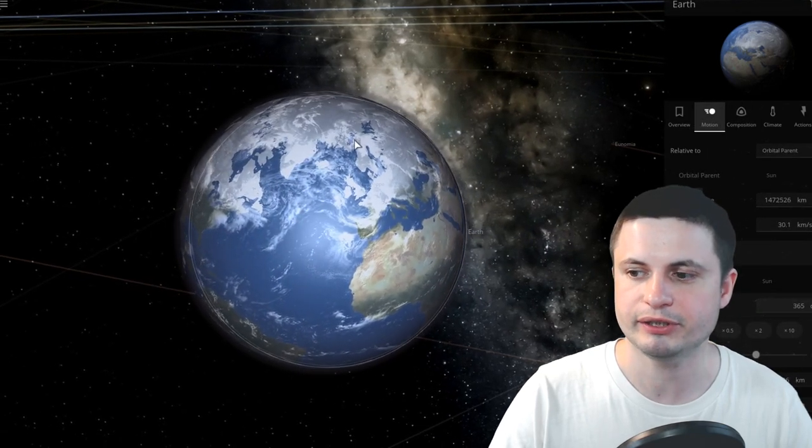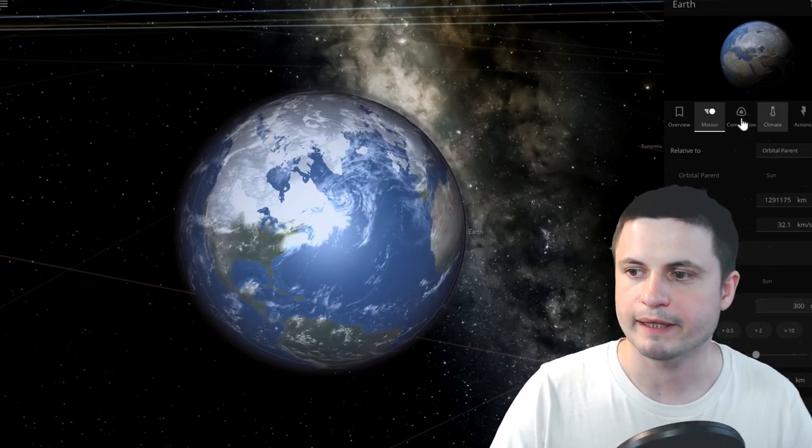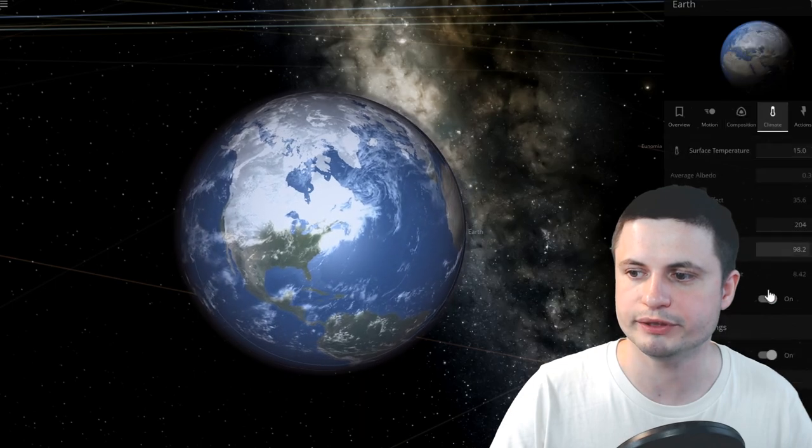And by going to Earth and potentially moving it a little bit closer to the sun, just so that the ice here disappears, we're going to change this to maybe 300 days orbital period. And we're going to also disable the climate here.